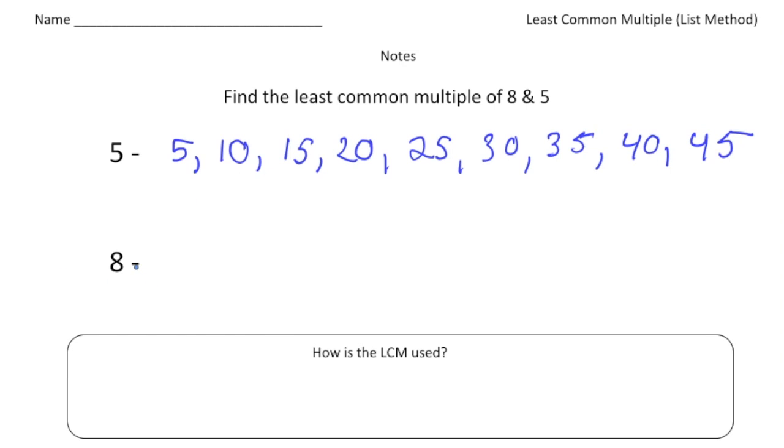Now let me list the multiples of 8. So 8 times 1 is 8. 8 times 2 is 16. 8 times 3 is 24. 8 times 4 is 32. And 8 times 5 is 40. And I'm going to stop there because I noticed that the 5 and the 8 both have a common multiple of 40.